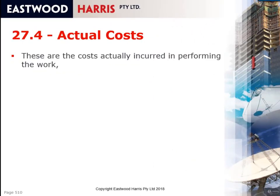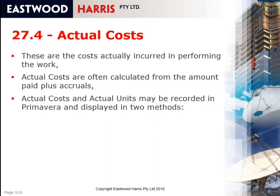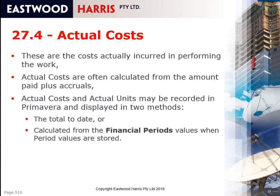The actual costs are the costs actually incurred in performing the work. If you were to stop the work at this point in time and pay everybody for the amount of work completed, that would be the actual cost — effectively the amount of money spent in your accounting system plus accruals. In P6 there are two methods to display actual cost: total to date, where actual costs are distributed evenly over time from when the first cost was expended, or using financial periods, which shows how much was spent in each month.